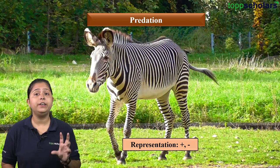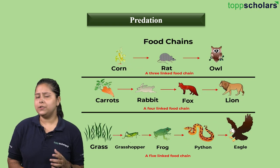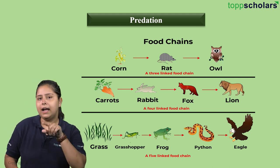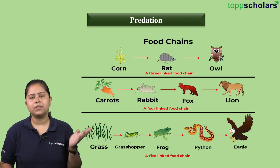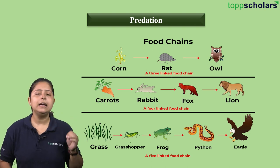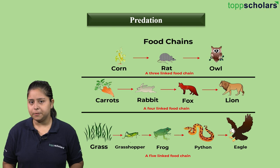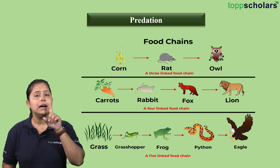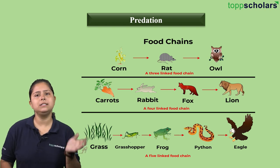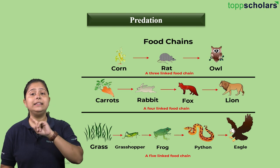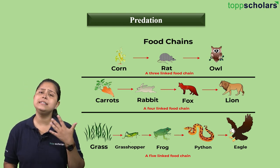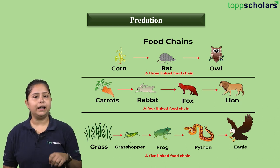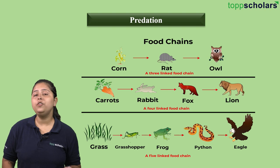In a food chain — corn eaten by rat eaten by owl — each link is predation. Rat eating corn is herbivory, an example of predation. Owl eating rat is also predation. In the corn-rat pair, rat is the predator (plus) and corn is the prey (minus). In the rat-owl pair, owl is the predator (plus) and rat becomes the prey (minus).